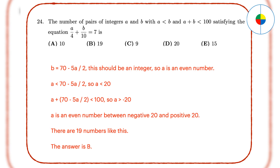Question 24: This is a guessing game requiring a lot of reasoning. First, figure out the range of A. You can do some conversion so that B is represented by A. Since B is an integer, 5 times A over 2 should also be an integer, so A must be an even number. Because A is less than B, solving the inequality gives A less than 20. Since A plus B is less than 100, solving gives A greater than negative 20. Therefore A is an even number between negative 20 and positive 20, and there are 19 numbers that meet the requirements. The answer is B.